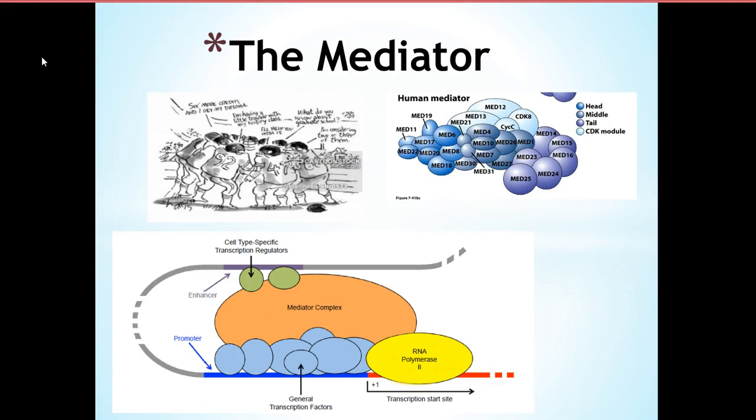The mediator is a giant complex of proteins at the end of the RNA polymerase II. The mediator is the message man for the activators and repressors to the RNA polymerase II. The mediator can activate or repress the RNA polymerase II.